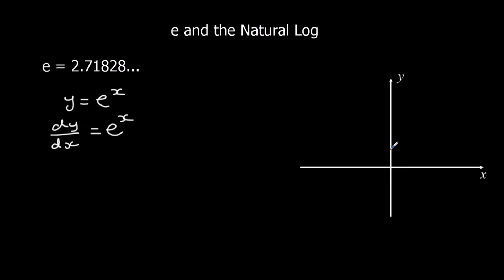On a graph, it's the same as any other exponential function in that it crosses at (0, 1). It never touches the x-axis and it climbs something like that.